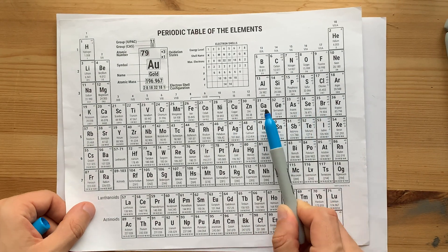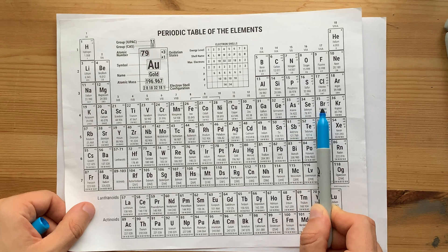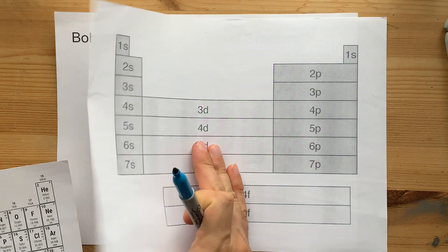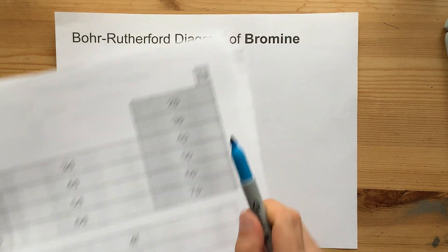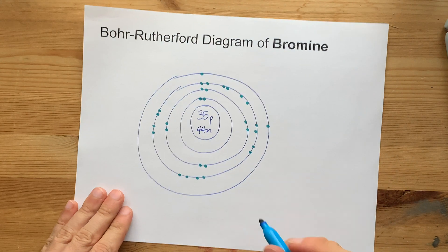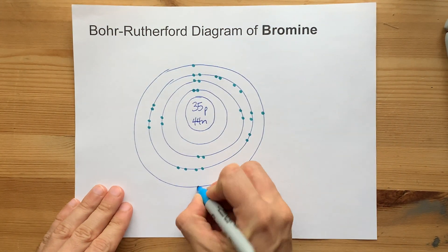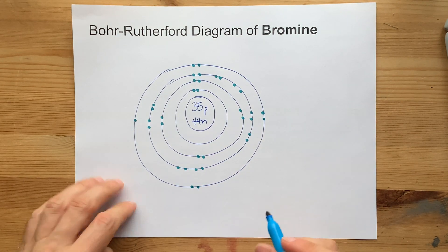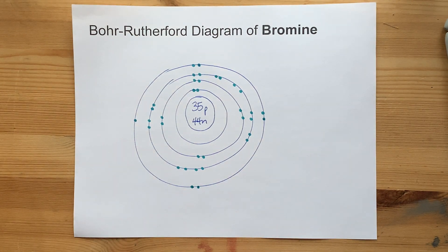And to get to bromine, we need 1, 2, 3, 4, 5 more in the fourth shell. The 4P here is like one of the subshells, but what matters is the 4. That's 1, 2, 3, 4, 5 extra electrons in the fourth shell.